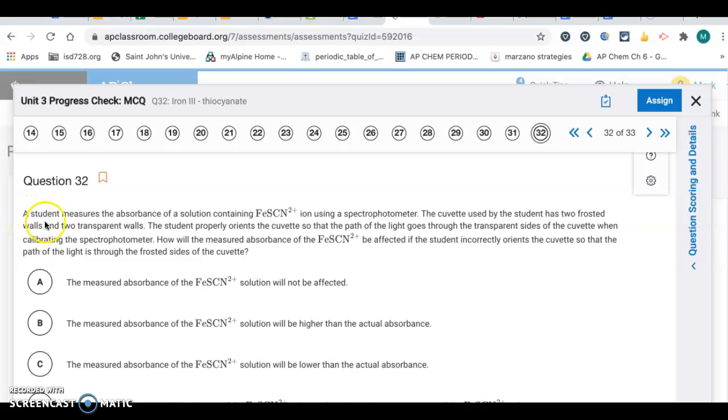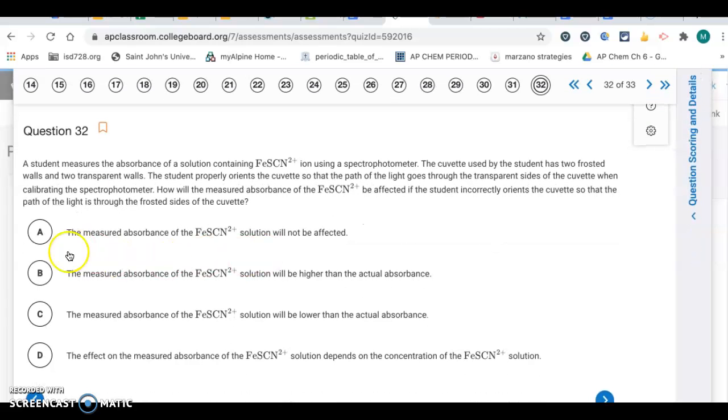Question 32. A student measures the absorbance of a solution containing FeSCN2+ using a spectrophotometer. The cuvette used has two frosted walls and two transparent walls. The student incorrectly orients the cuvette so the path of light is through the frosted sides. That means more light will be absorbed. The absorption should be too high. The measured absorbance would be higher than the actual absorbance because the cuvette was improperly lined up. Letter B.